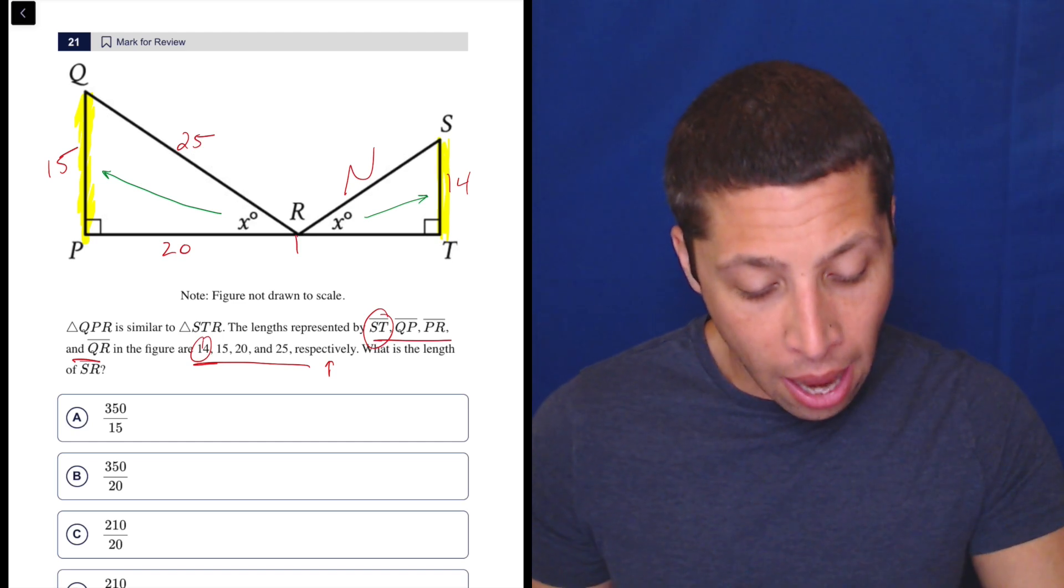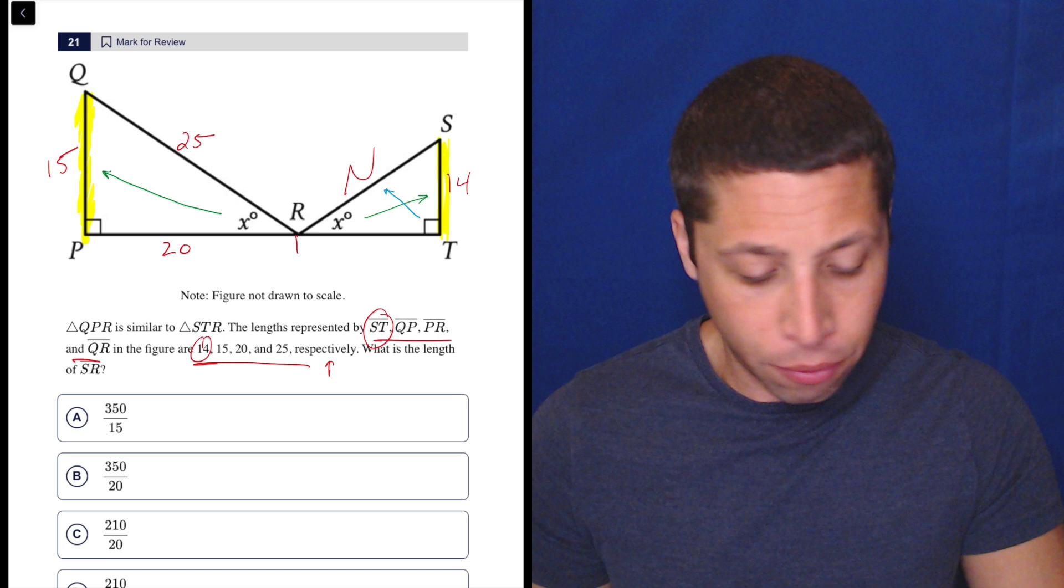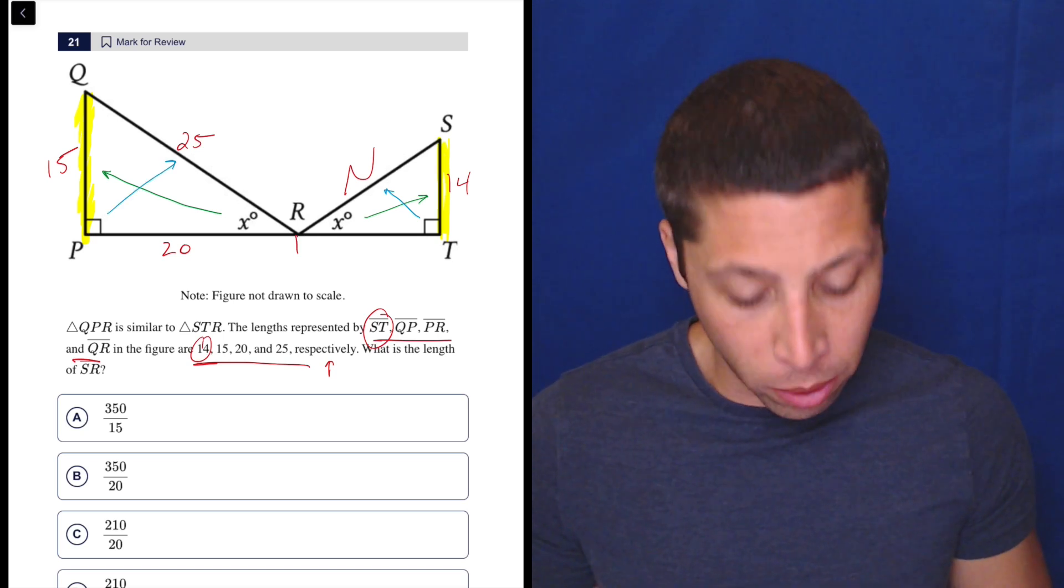So in this case, because I'm looking for N, I'm looking for what's across from the right angle. So I'm going to use that as well. So that means I'm going to use the 25.